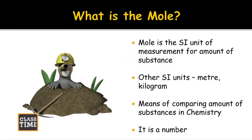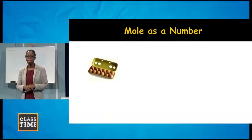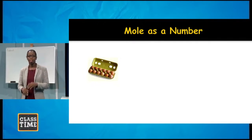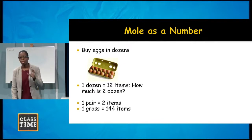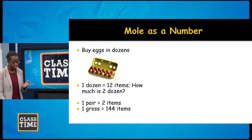The mole represents a number. To make this simpler: when you buy eggs in the supermarket, you may see them sold as a dozen eggs — a dozen represents 12. Half a dozen is six items. In the same way, a pair of anything is two, and one gross is 144 items. The mole, like 'dozen' or 'pair', is just a word that represents a specific number of items.